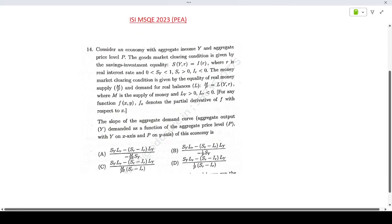Hello everyone, welcoming you to Shore of Source Classes. Today we are looking at ISI MSQE 2023 PEA paper, question number 14. Consider an economy with aggregate income Y and aggregate price level P. The goods market clearing condition is given by the savings investment equality: S(Y,r) equals I(r), where r is the real interest rate.